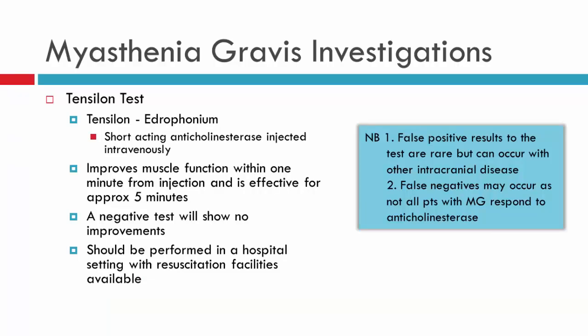The Tensilon test is a gold-standard investigation performed in a patient who is suspected of having Myasthenia Gravis. What you're doing is essentially injecting Tensilon, which is a short-acting anticholinesterase. It's injected intravenously and you can see improvement in the muscle function through this injection. Not all patients actually respond to Tensilon, so a negative result does not necessarily indicate that the patient does not have Myasthenia Gravis. You can also have false positives, though rare.